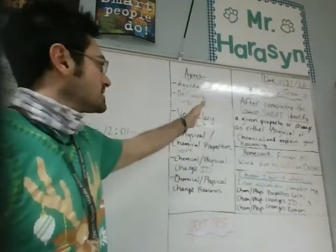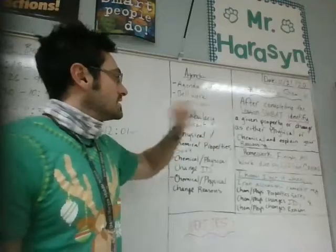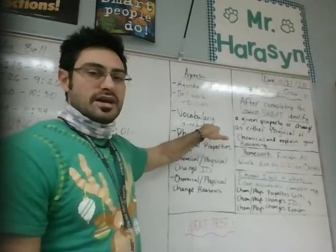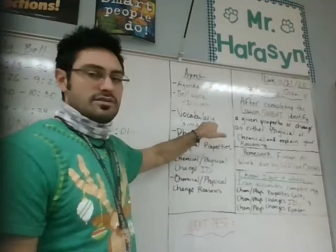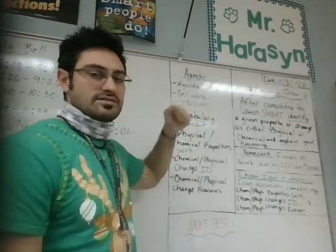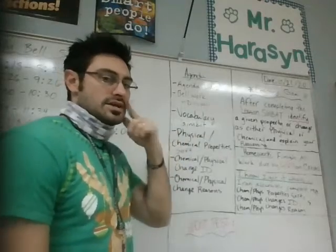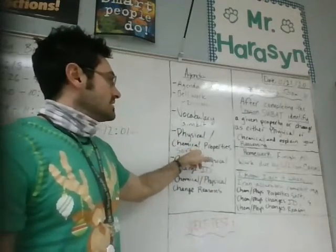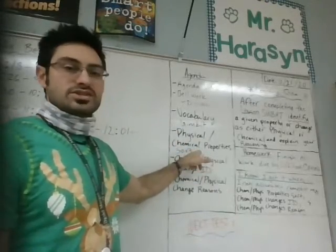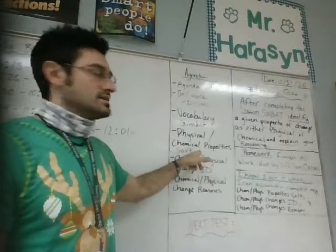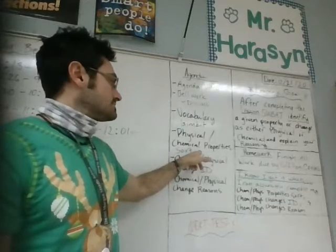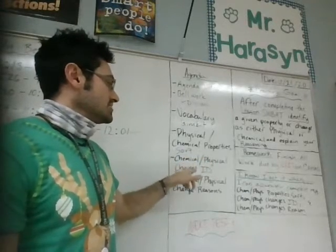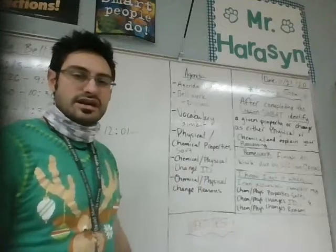Here's your roadmap, your turn-by-turn directions. We're going to go over the vocabulary — this might happen at the end of class or at the beginning; I haven't really figured out the best fit, but we're going to try to do that at some point. We've got the physical or chemical property sort, which is a Canvas activity. Then we have the chemical or physical change IDs.